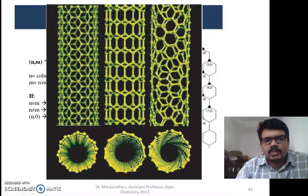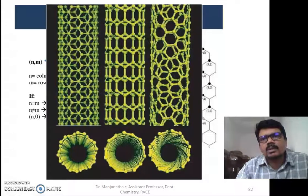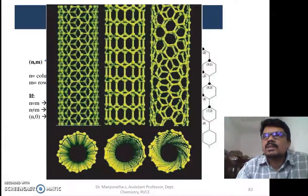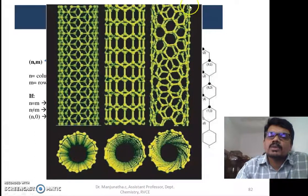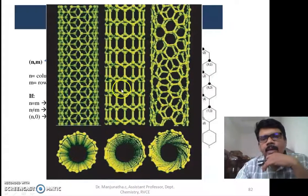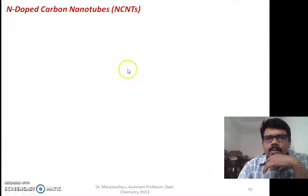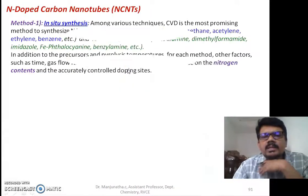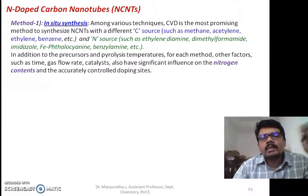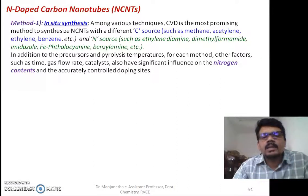First, I am going to discuss an important material used for oxygen reduction reaction. This is a very famous reaction we study in batteries and fuel cells, in which they use nitrogen-doped carbon nanotubes. We call them NCNTs, nitrogen-doped carbon nanotubes.